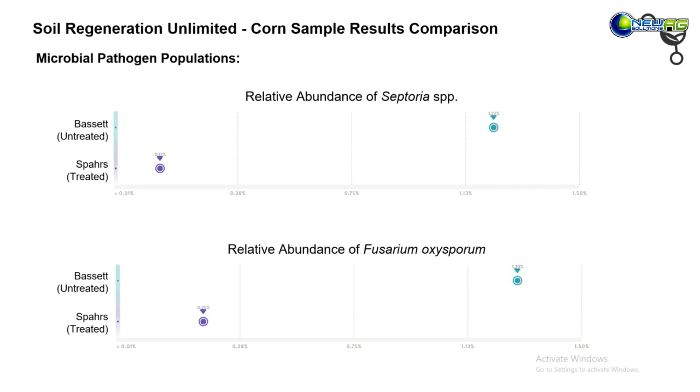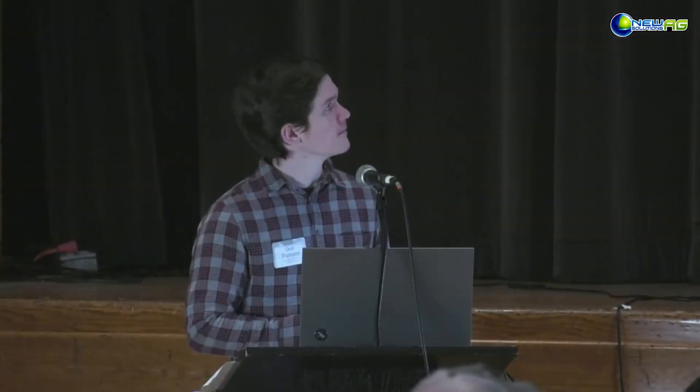We can also look at levels of specific species or genus in the soil using another tool in our online portal. Looking at two pathogen species populations: Septoria bacteria had a relative abundance of 1.22% in the untreated versus 0.12% in the treated. Fusarium oxysporum was also much more prevalent in the untreated versus the treated. This can inform regimens for fungicides and other treatments to assess risk level — of course these are impacted by factors like weather and moisture levels too.